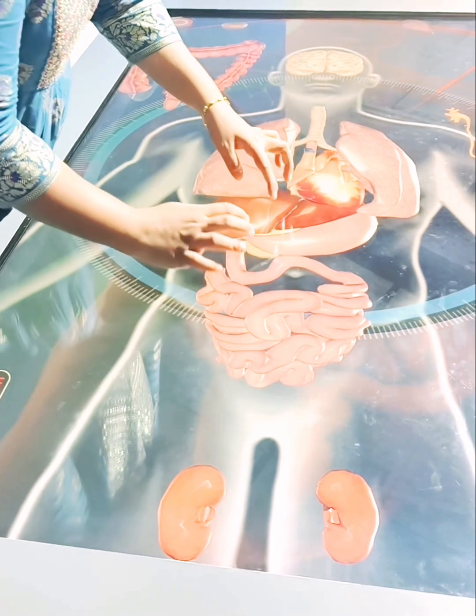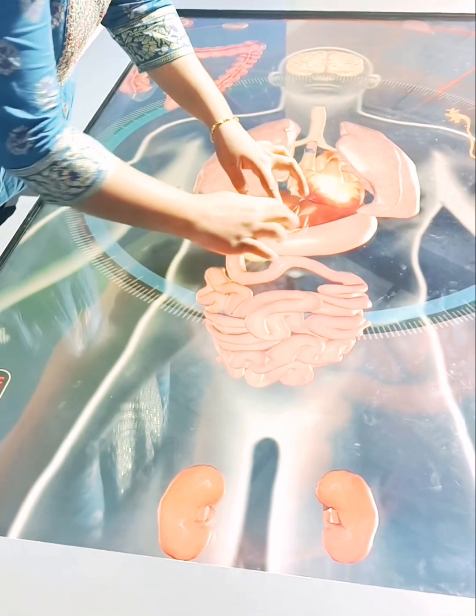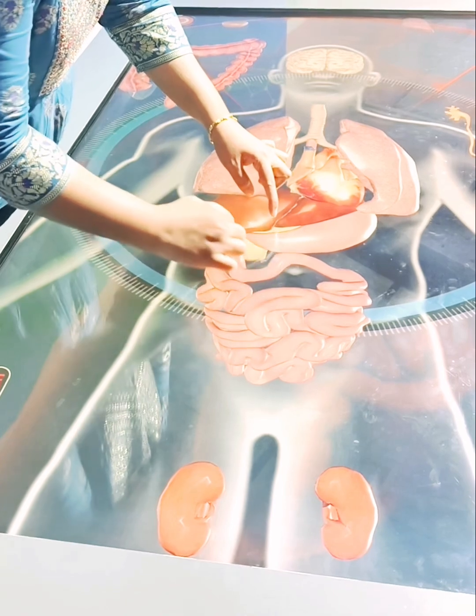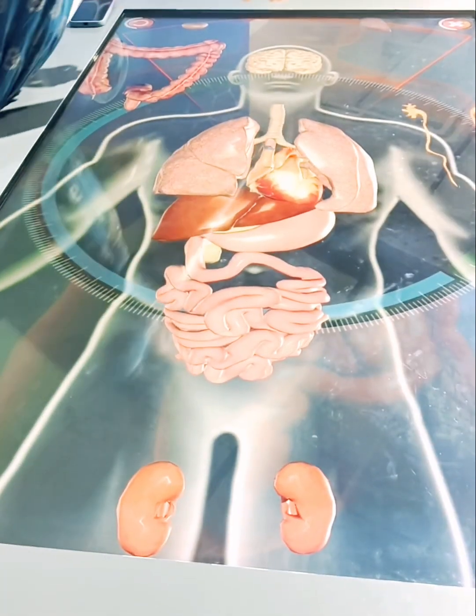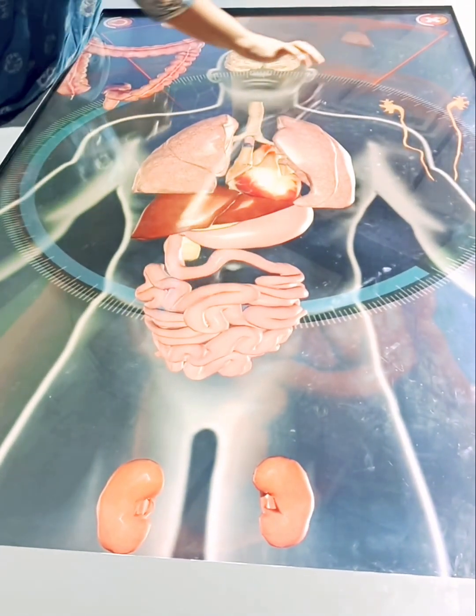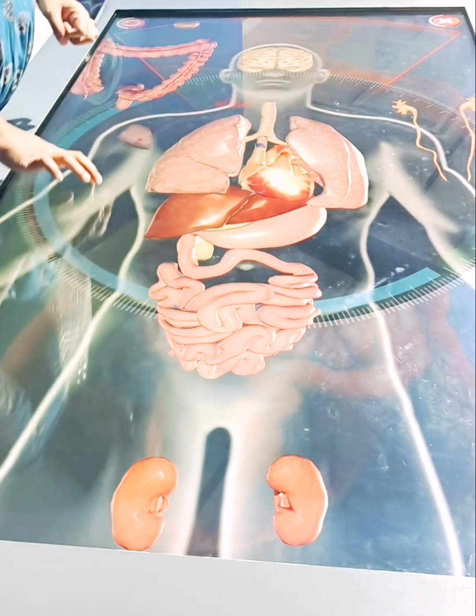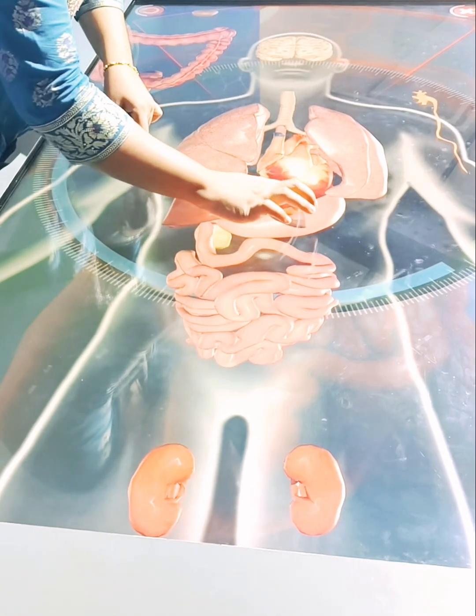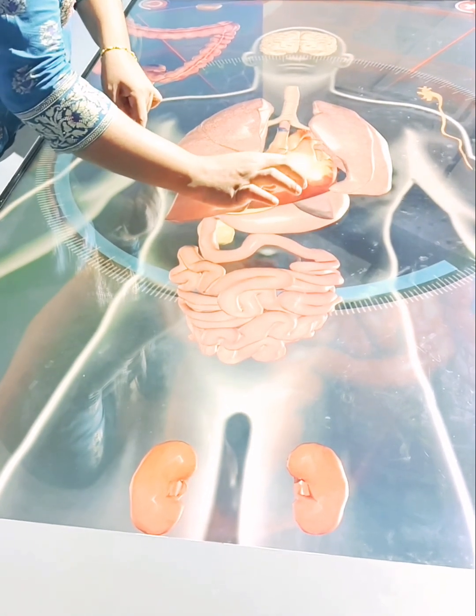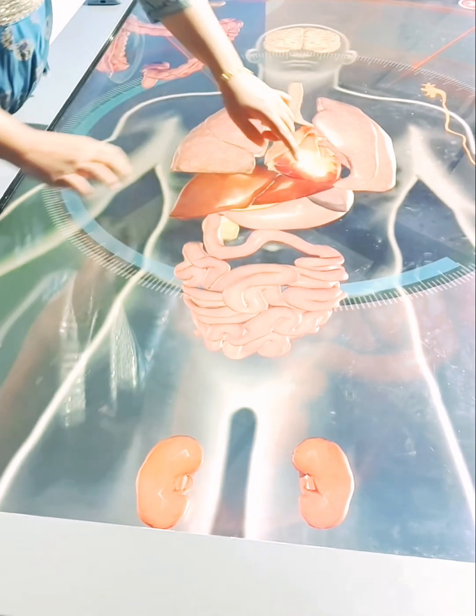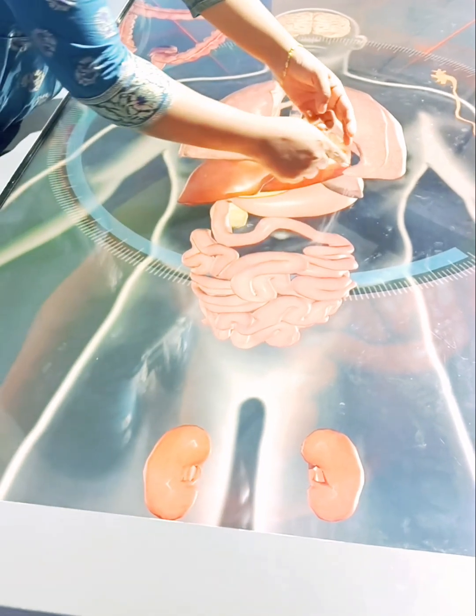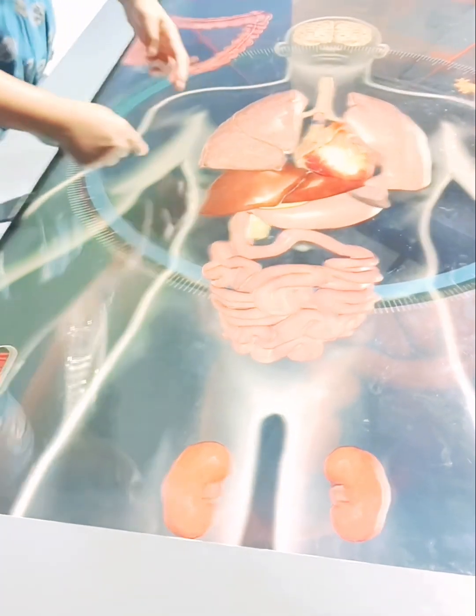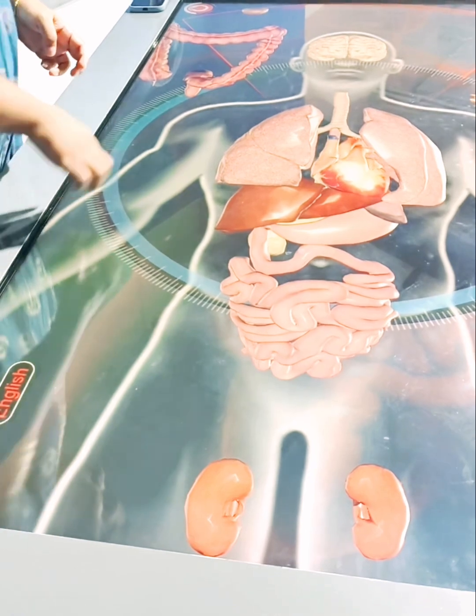Next we have the spleen. It is located on the upper left side of the abdomen under the ribs and above the stomach. So the spleen filters the blood to help destroy microorganisms and it gets rid of the old or damaged red blood cells. It also makes lymphocytes, also known as white blood cells, and stores blood cells.